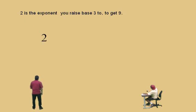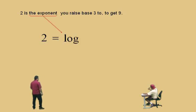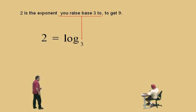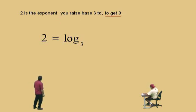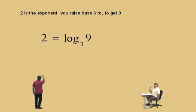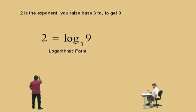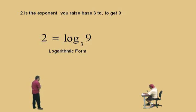Two is the exponent. And that's our logarithm. You raise base three to — there's your three — to get nine. There you go, Charlie. Now there it is. There's the sentence translated to a math statement using the magical mathematics microphone. All right, Charlie, this is called the logarithmic form.